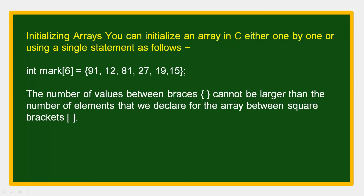Initializing: you can initialize an array in C either one by one or using a single statement. For example, mark is the name of the array, int is the data type, and 6 is the size of the array — so we can store up to six elements.